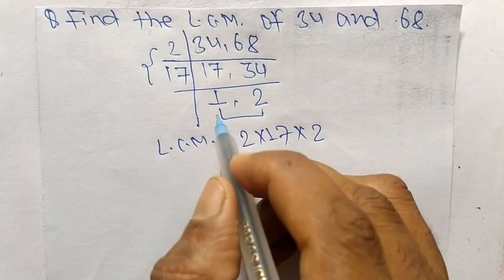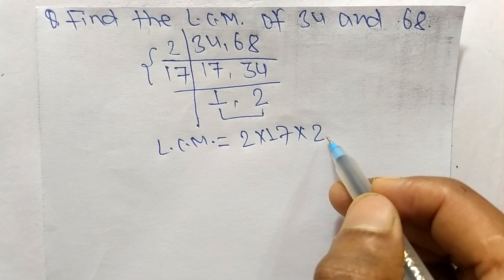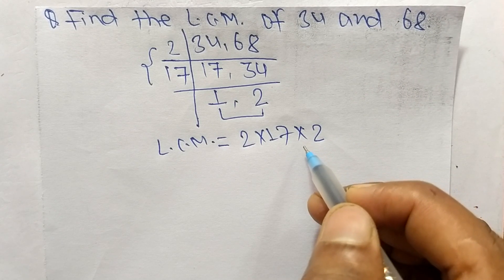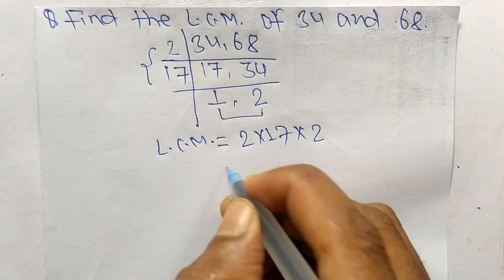We neglect 1 because multiplying any number by 1 gives the same result, so we don't take it.